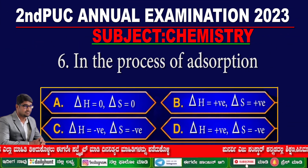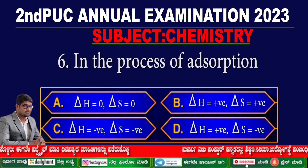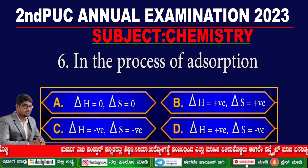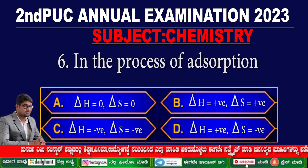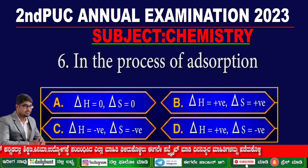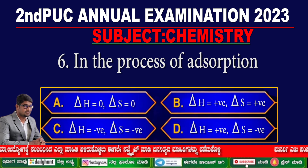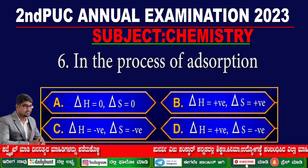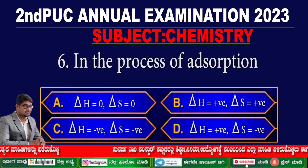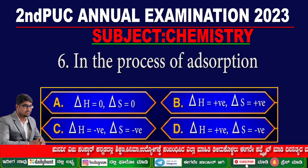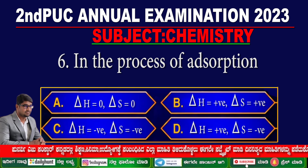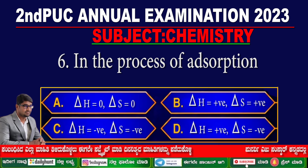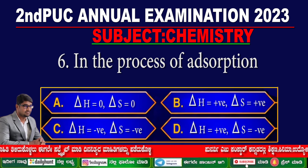Question 6. In the process of adsorption — option A: ΔH = 0, ΔS = 0; option B: ΔH = positive, ΔS = positive; option C: ΔH = negative, ΔS = negative; option D: ΔH = positive, ΔS = negative.